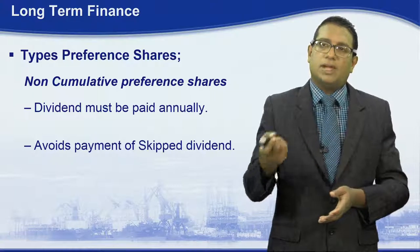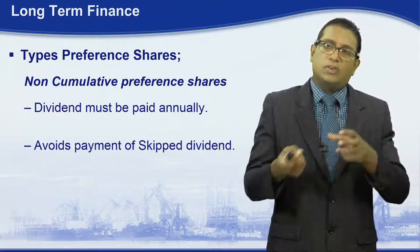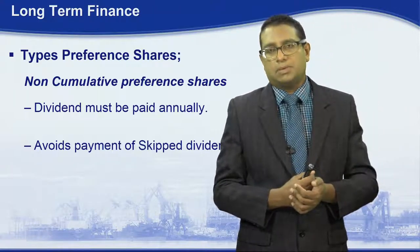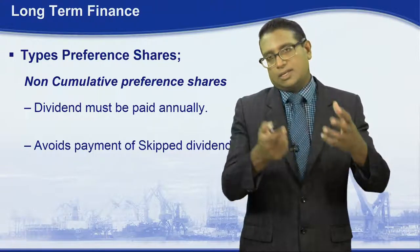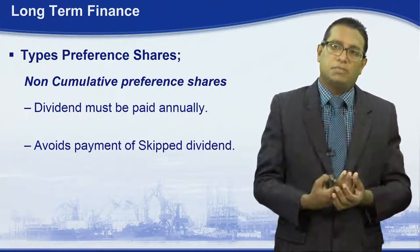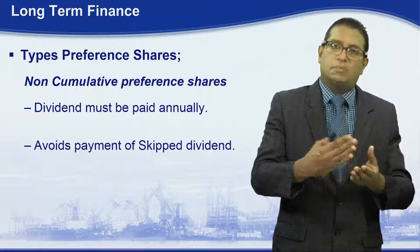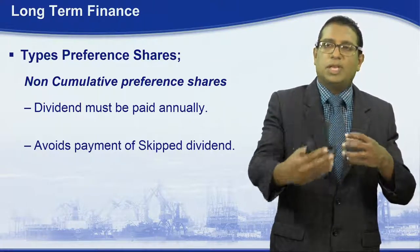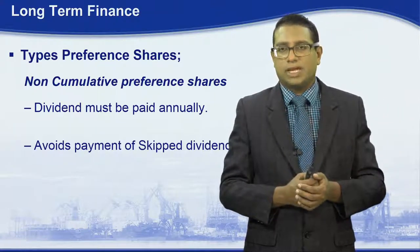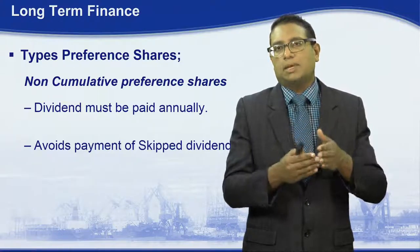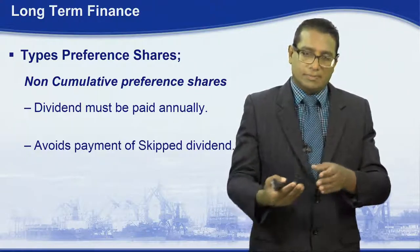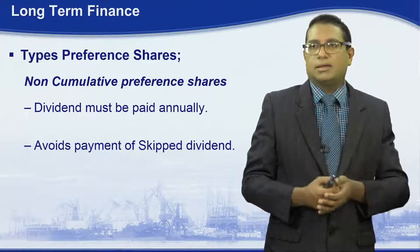The difference between cumulative and non-cumulative preference shares is that non-cumulative preference shares avoid the payment of skipped dividends. The company gets the benefit because the dividends are paid without the cumulative part. For example, if in one particular financial period the dividend is not paid, there is no need to pay the cumulative dividend in the next financial year.